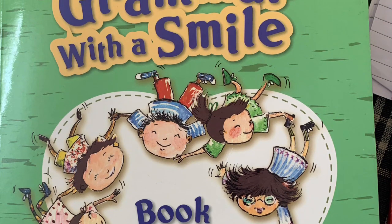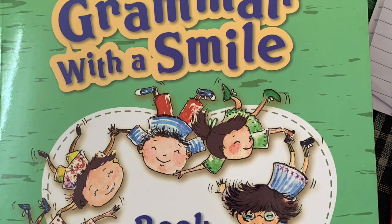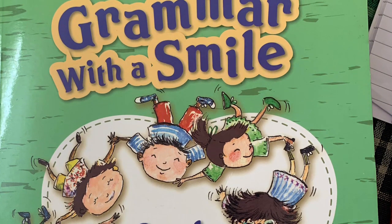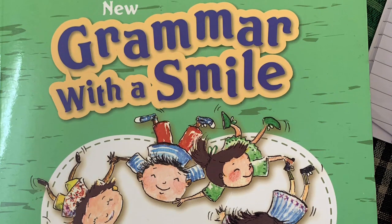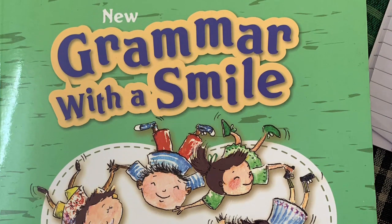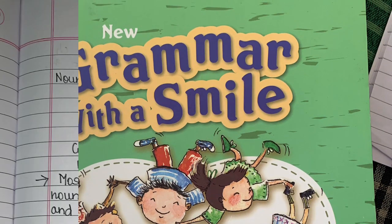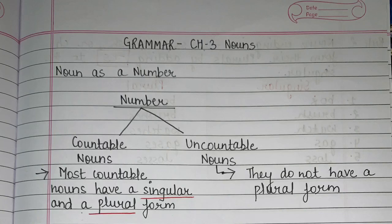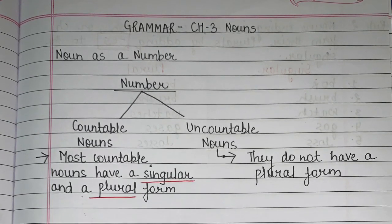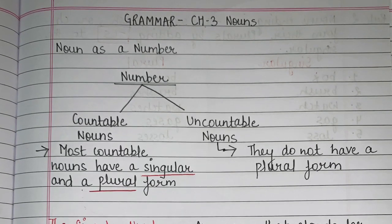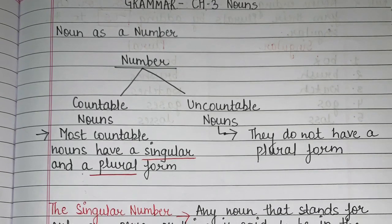In the recent video lesson we understood nouns as a number, in which we discussed countable nouns and uncountable nouns. Today we will further explore this topic. When we talk about nouns as a number, we know it is further divided into countable nouns and uncountable nouns, and I believe we have all understood what countable and uncountable nouns are.